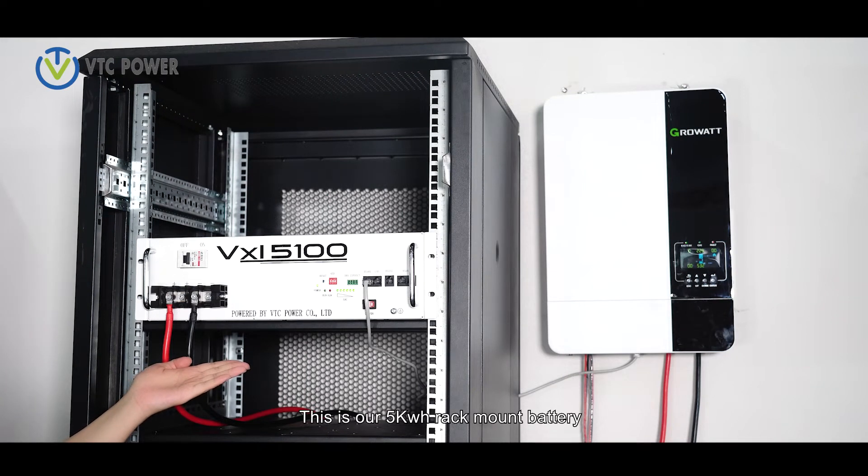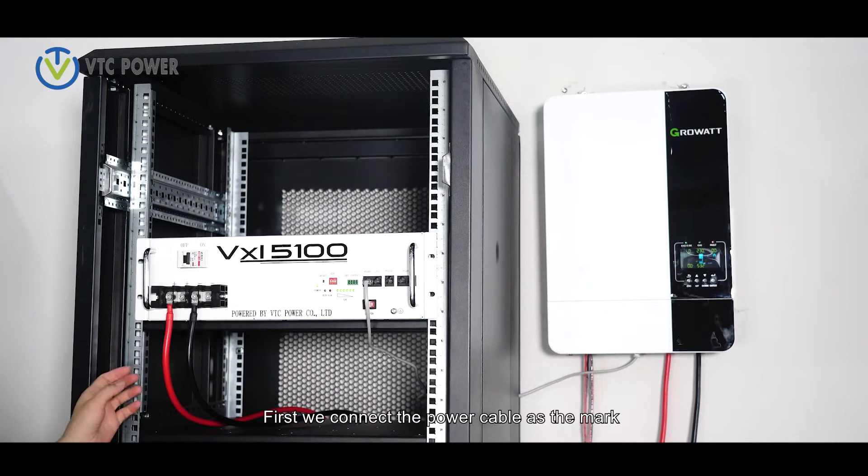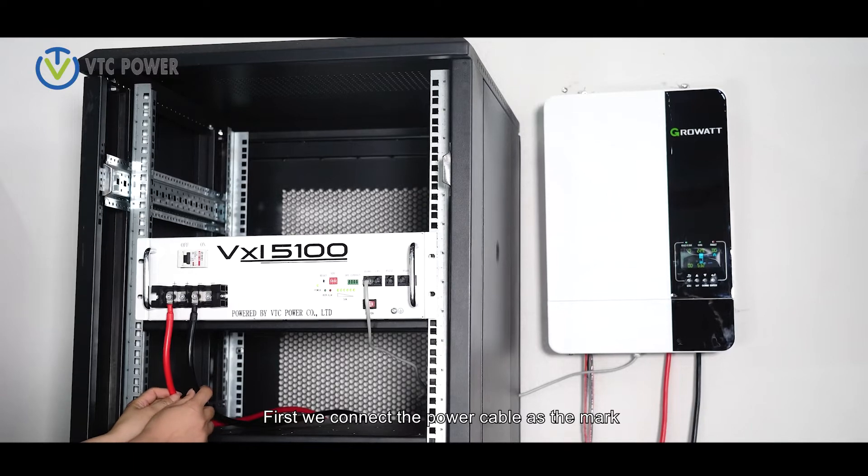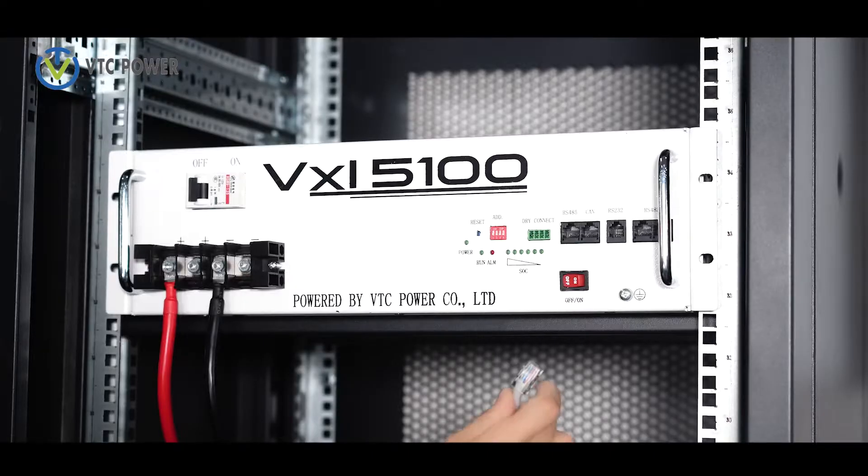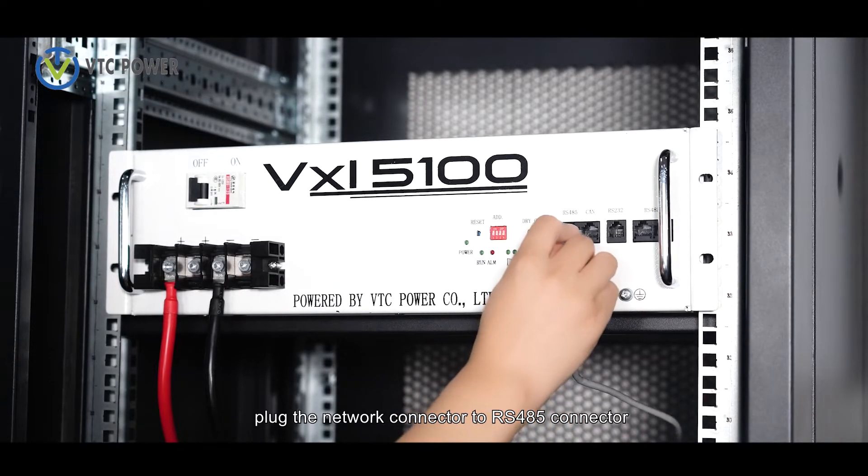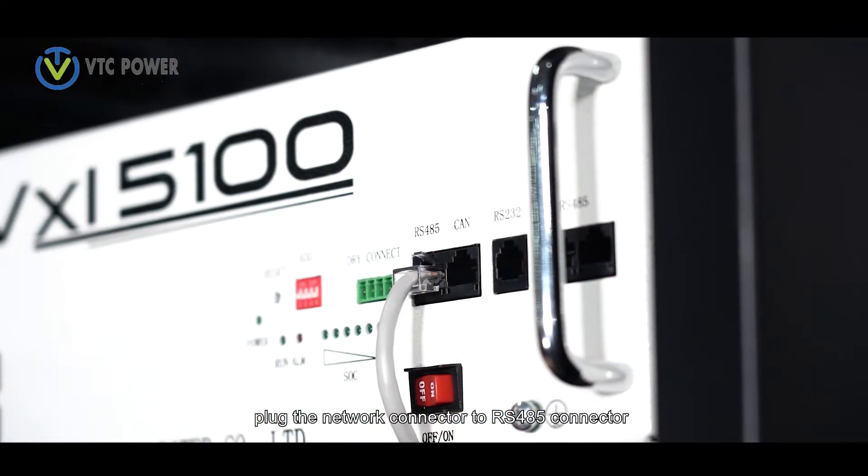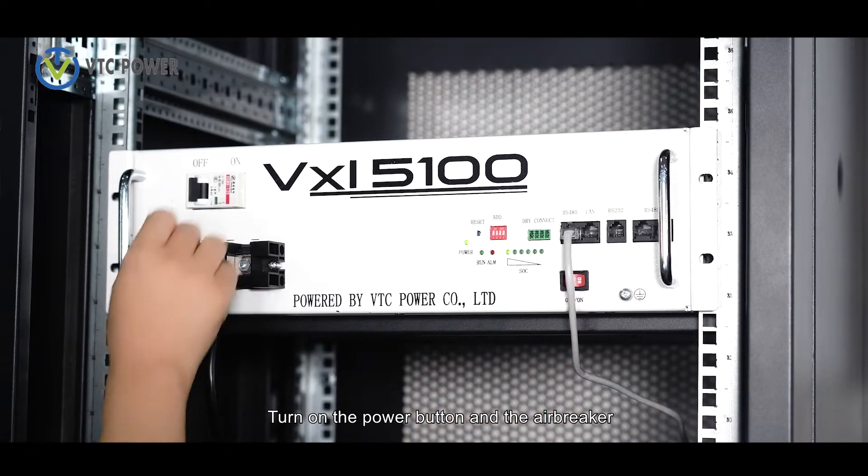This is our 5kW rack mount battery. First, we connect the power cable as the mark. Plug the network connector to RS485 connector. Turn on the power button and the L breaker.